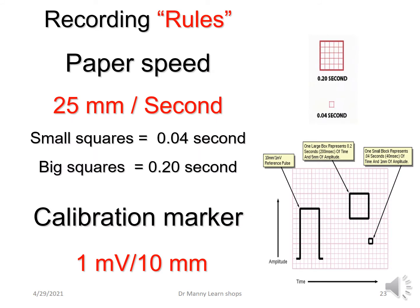As indicated previously in the paediatric course, there are recording rules. Paper speed must be set on your machine at 25 millimetres per second. At that setting, every small square equals 0.04 of a second or 40 milliseconds, and every big square equals 0.2 of a second or 200 milliseconds. The calibration marker must be set at 1 millivolt, which is the same as 10 millimetres — otherwise, what you record will be incorrect.